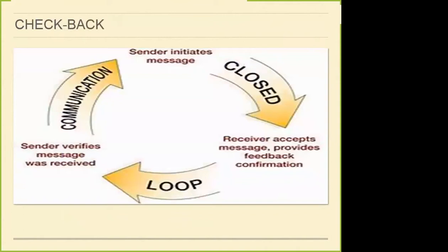Check back, or closed-loop communication, can be used in an urgent matter or even when receiving important orders verbally or over the phone. It's a way to validate information. The sender initiates the message, and I — as the receiver — confirm and communicate back what I believe I heard, and then the sender confirms the message was given correctly. For example: a physician says 'Rocky, go ahead and charge and provide 300 joules of synchronized cardioversion.' I would respond: 'You want me to give 300 joules of synchronized cardioversion?' And they confirm: 'Yes, Rocky, that's correct.' What was communicated was the treatment, the dose, the type, and the timing.